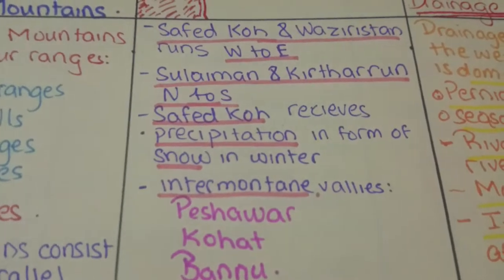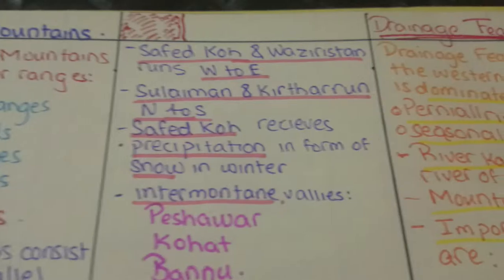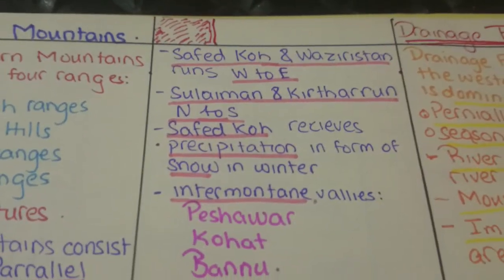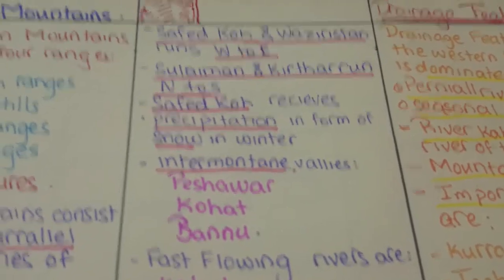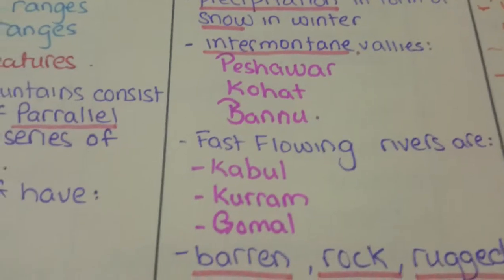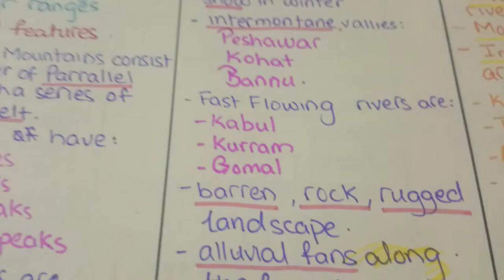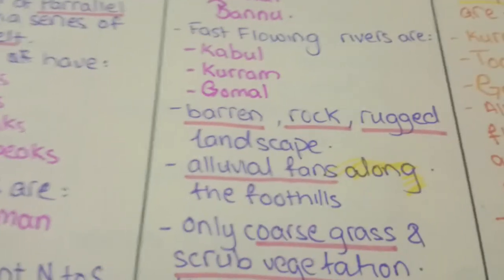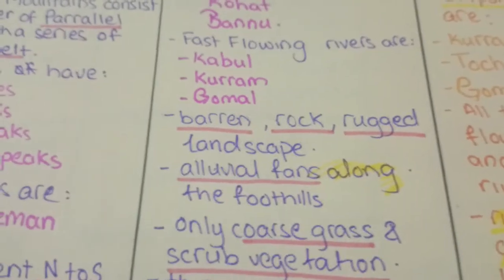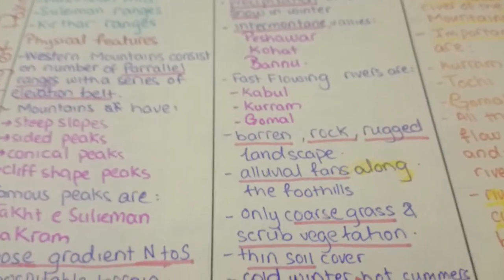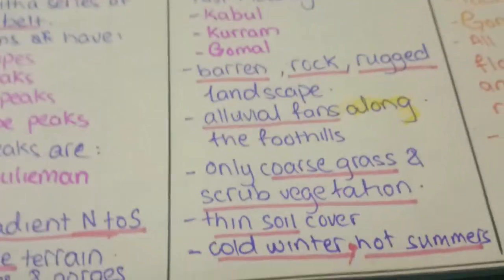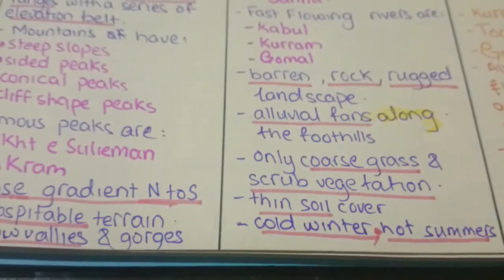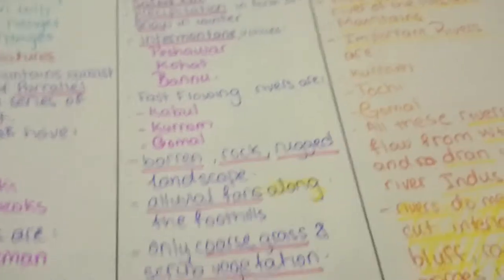Sufaid Koh and Waziristan Hills run from west to east. Suleiman and Kirthar run from north to south. Sufaid Koh receives precipitation in the form of snow in winter. Valleys here are Peshawar, Kohat, and Bannu. Fast-flowing rivers are Kabul, Kuram, and Gomal. Barren rocks and rugged landscape are present, along with alluvial fans along the foothills. Only coarse grass and scrub vegetation is present due to its inhospitable terrain. Thin soil cover, cold winters and hot summers.